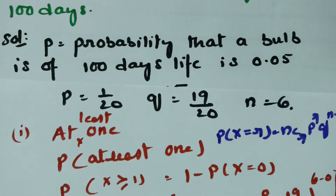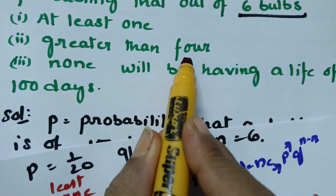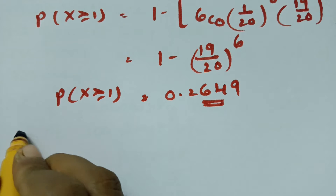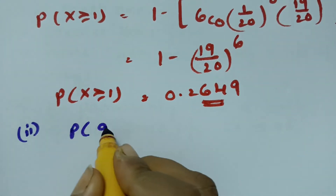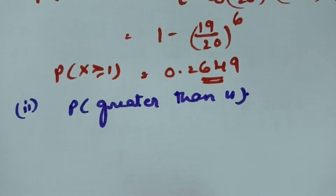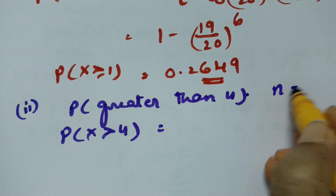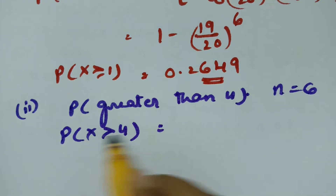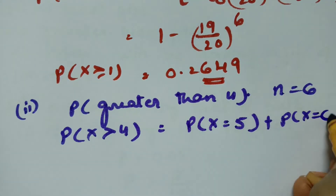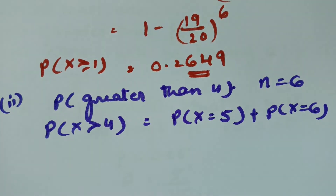The next part is greater than 4. The probability that the number of bulbs greater than 4 is P(X > 4). Since N equals 6, X can be 5 or 6, so P(X > 4) equals P(X = 5) plus P(X = 6).